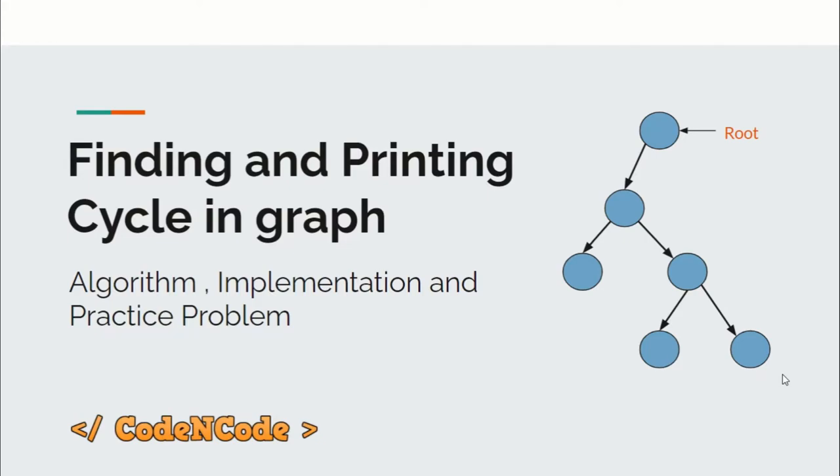Hello guys, this is Code N Code and this is the 26th lecture of graph theory part one series. In this lecture we'll be learning how you can find out and print a cycle in a given graph. We'll be learning the algorithm, implementing it, and I'll give you a practice problem at the end.